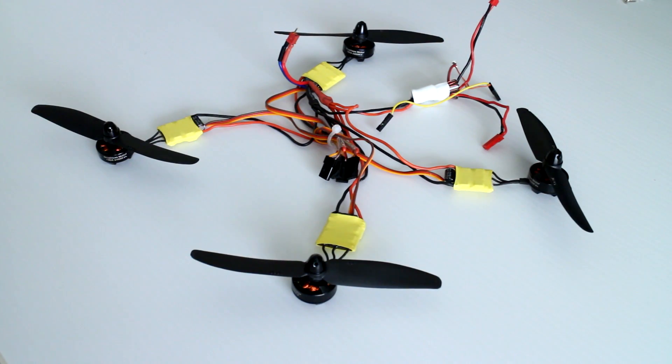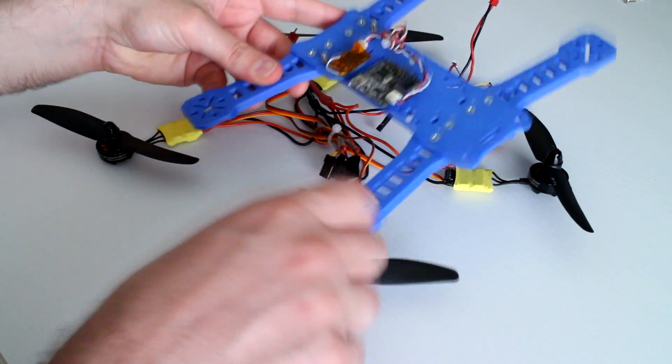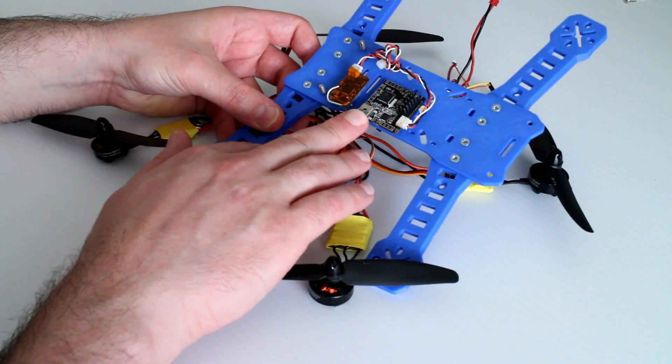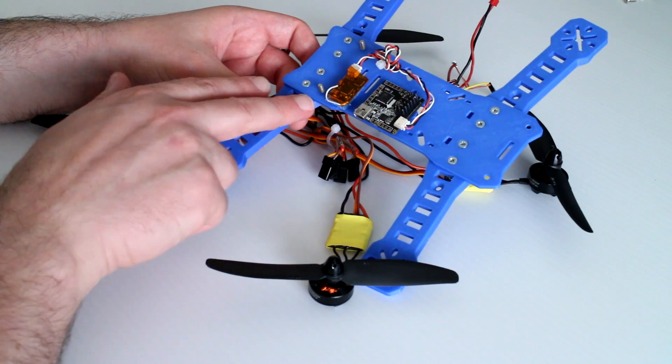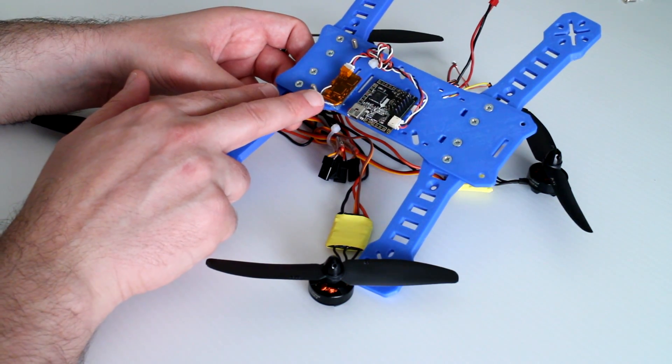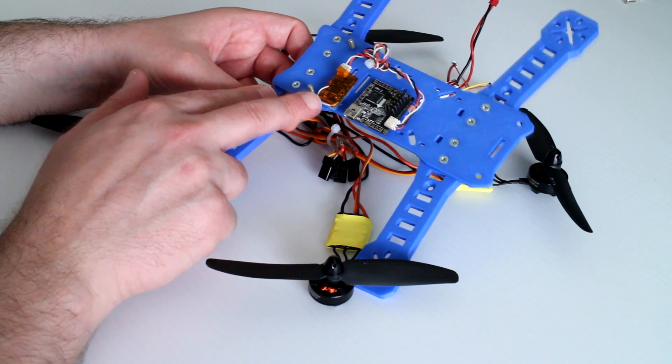The flight controller that I'll be using here is the NanoWii flight controller, once again purchased from HobbyKing. The receiver that I'll be using is a Spektrum satellite receiver. This is an Orange RX branded receiver from HobbyKing.